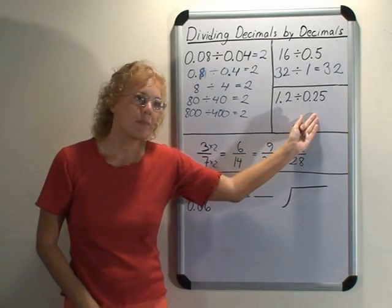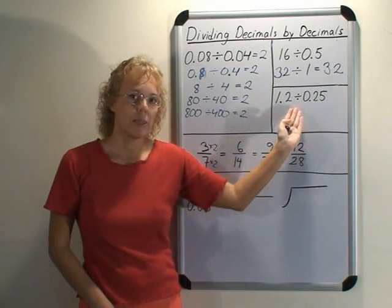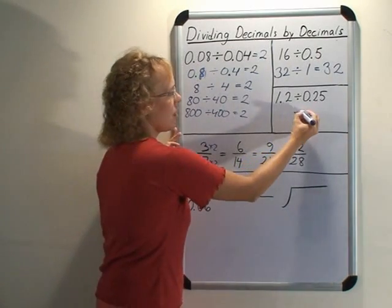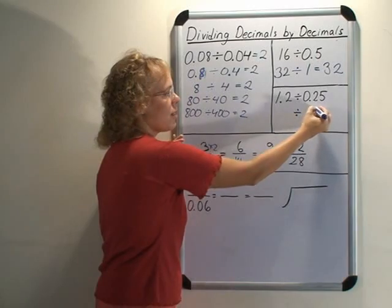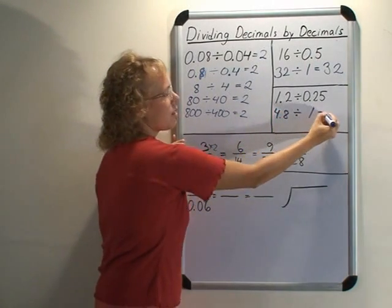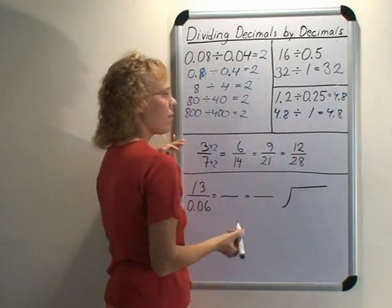Here's another one similar. Since this is 0.25, I'm going to multiply both by 4, because then I get 1 as a divisor. And this is 4.8. So the answer to both problems here is 4.8. Very easy.